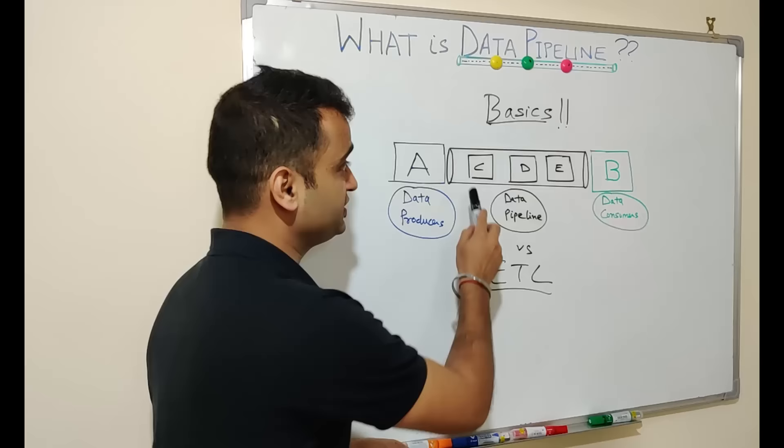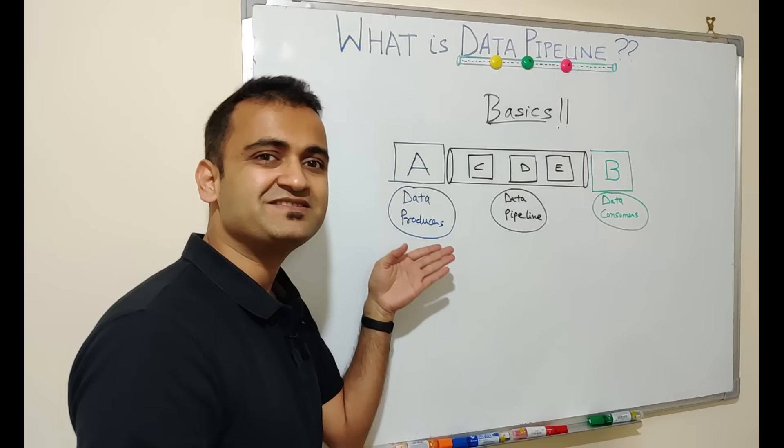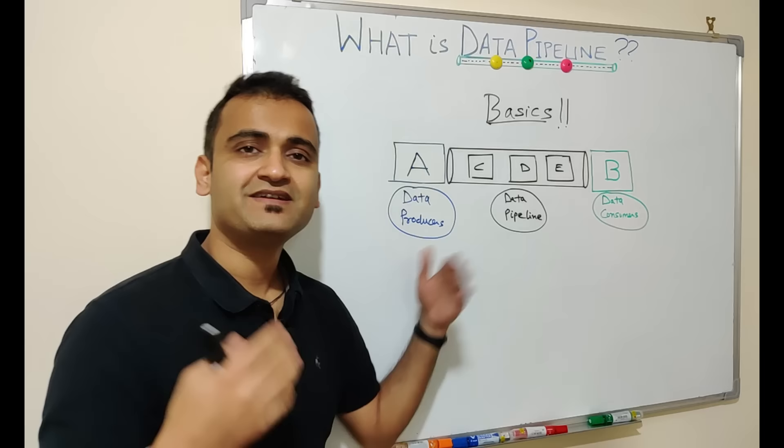These are the points where actual data processing, data cleansing, data governance takes place. In this basic diagram, point A is called data producer, point B is data consumer, while these points C, D, and E are the actual data pipeline. This is a basic diagram explaining in layman terms how a data pipeline works.